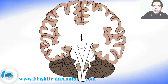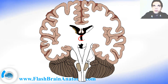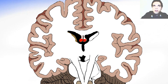Then we have the third ventricle of the brain and the lateral ventricles of the brain with the fornix. So this was the third ventricle, these are the lateral ventricles, and this and this are the fornix.